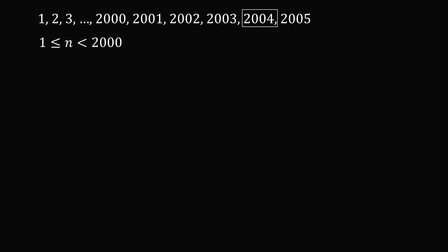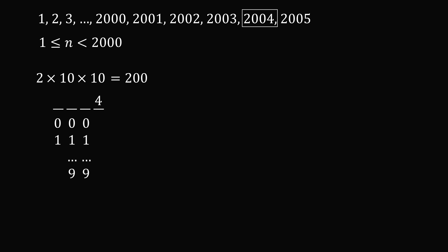Now let's consider all whole numbers greater than or equal to 1 and less than 2000, and count how many contain the digit 4. For a 4-digit number where the ones digit is 4: the thousands digit could be 0 or 1 — two possibilities — the hundreds has 10 possible digits, the tens also has 10. So we have 2 × 10 × 10, which equals 200.